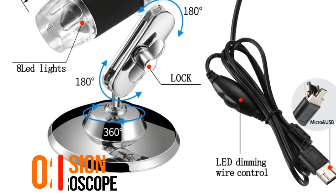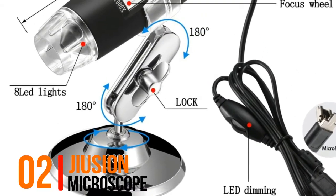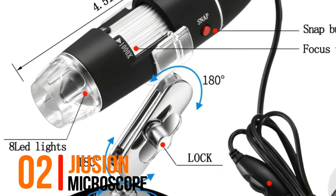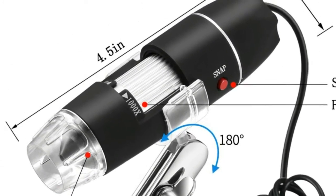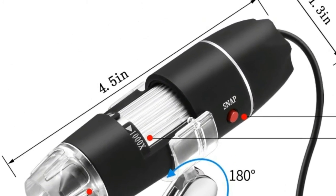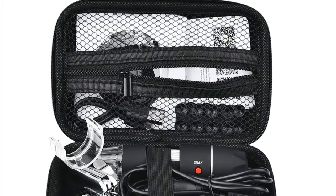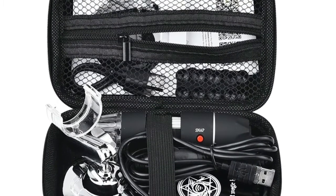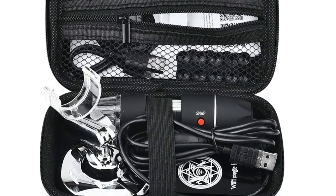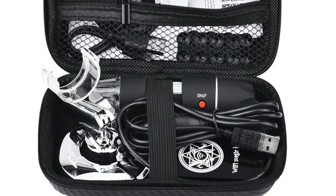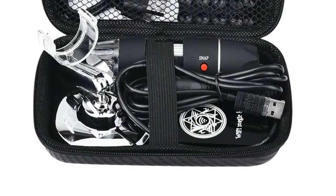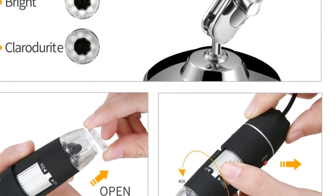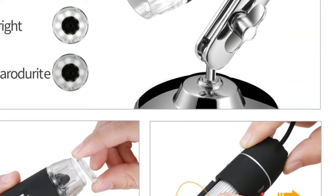Number 2, Jusion Microscope. Taking an image or video is as simple as tapping the image/video button on your device or pressing the related APP trigger. The Wi-Fi handheld digital microscope features a 2MP HD CMOS sensor and streams instantly to your phone.